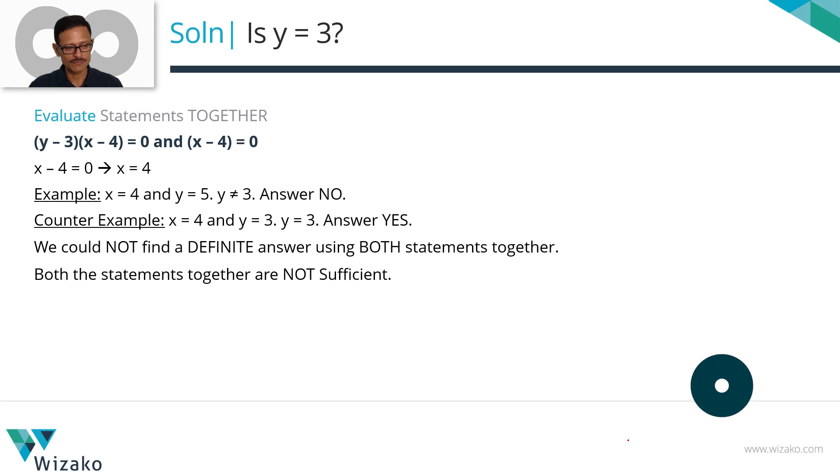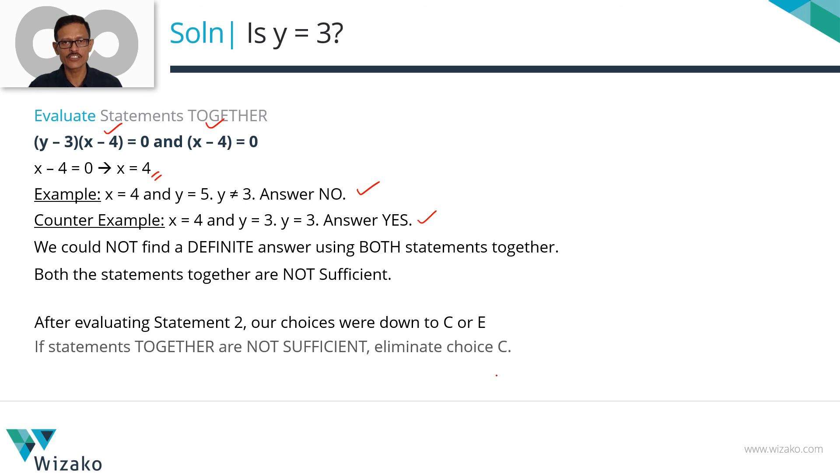Summarize it in a printed form. x equals 4 is what we got from statement 2. We are taking x equals 4, checking with a case where y is not 3. And we seem to have both these statements holding good there. So answer is no. When x is 4 from statement 2, if y is 3, both these statements still hold good. What is the answer to the question? Is y equal to 3? In this case, yes is the answer. Despite combining the two statements, we don't have a conclusive answer. If I'm down to C or E, eliminate choice C. Choice E is the answer to this question.